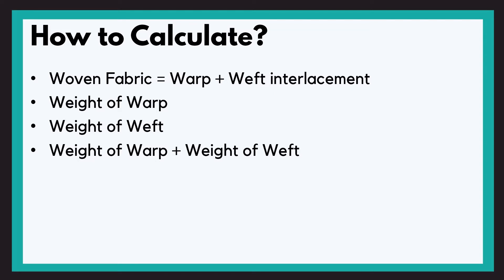Let's see how to calculate this. Now we know that woven fabric is made with warp and weft interlacement. So what will we do? We will remove the weight of warp and weight of weft in 1 square meter and we will add both to get GSM.